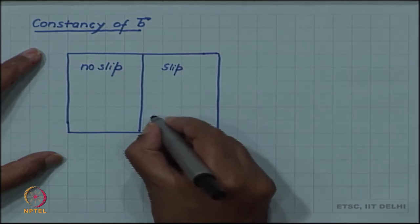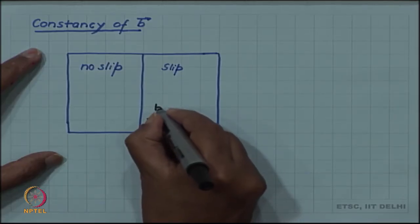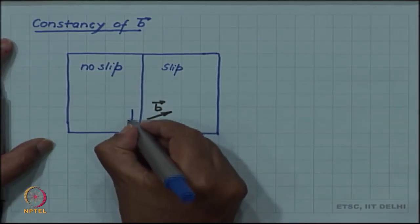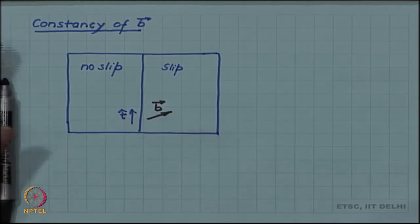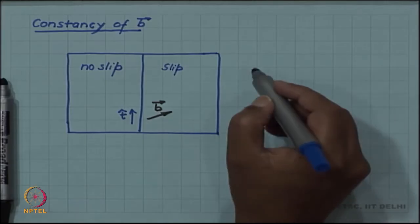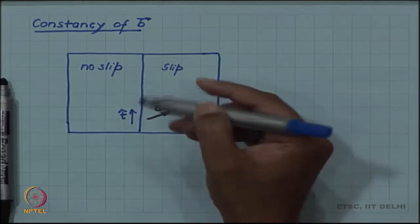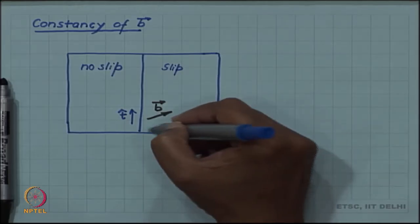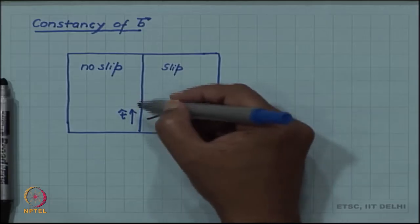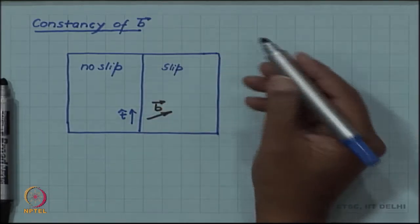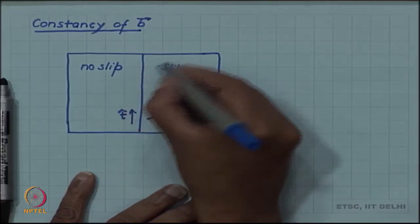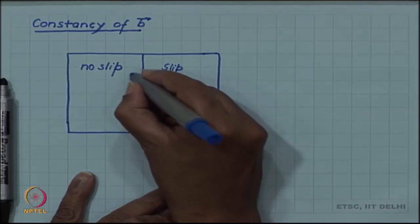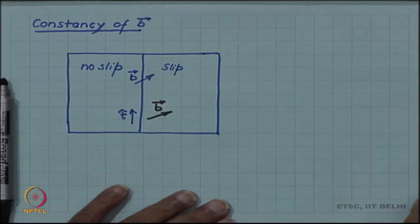The magnitude and direction of the slip vector is the Burgers vector, and the dislocation line itself is characterized by a tangent vector — a unit vector tangent to the dislocation line. Since the slip region has a single slip, it is characterized by the same slip vector or Burgers vector everywhere in this region. The dislocation line therefore does not change its Burgers vector from point to point; it has the same Burgers vector all along the line.